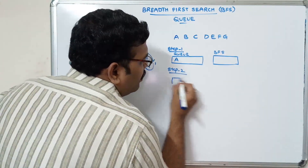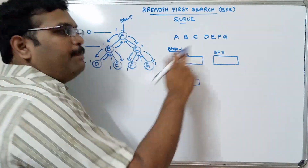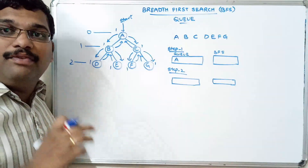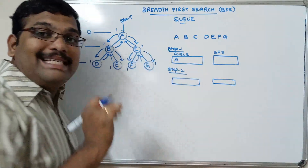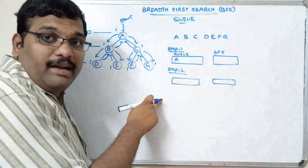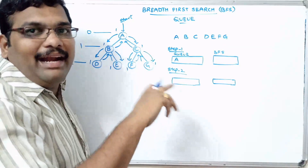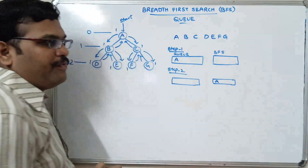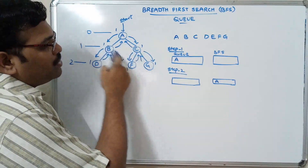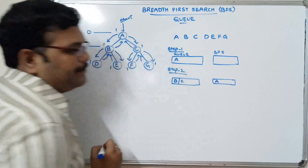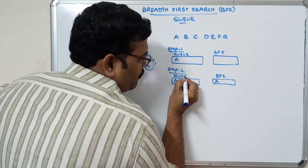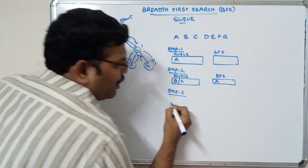Step two: remove the element from the queue and place it in the BFS result. In a queue, deletion is from the front end and insertion is from the rear end. So A is removed from the front and placed in BFS. Now insert all the adjacent nodes of A into the queue — the adjacent nodes are B and C.